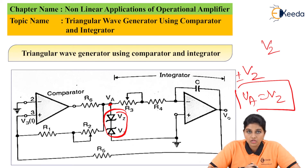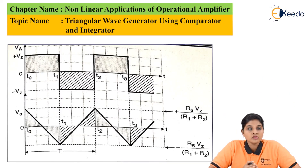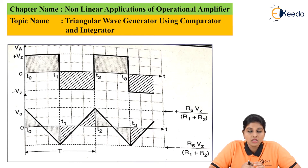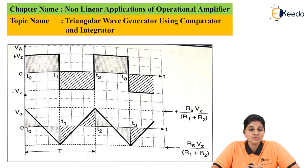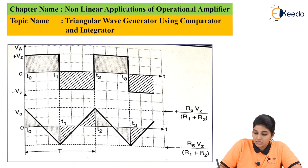Now let's understand the working of the circuit by considering the waveforms. The output of the comparator is applied as the input to the integrator, and because it is clamped to a value of plus or minus Vz, the integrator output remains constant. That means the input provided to the integrator remains constant, which produces a constant integrator output. Now we know that Va is equal to Vz.